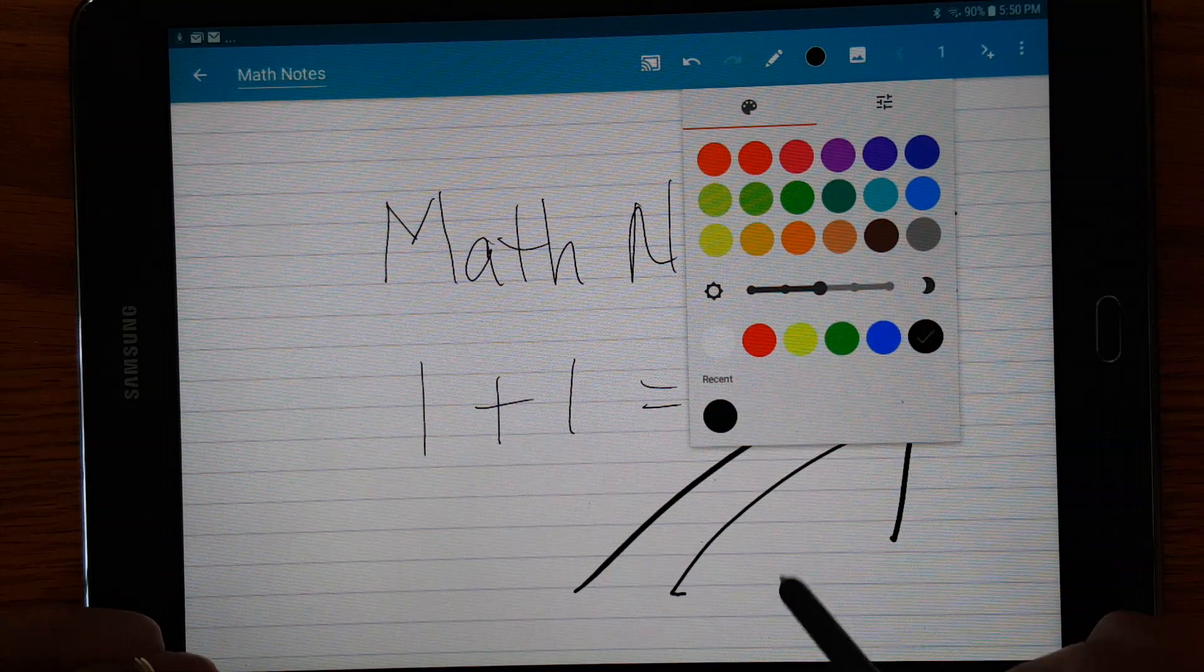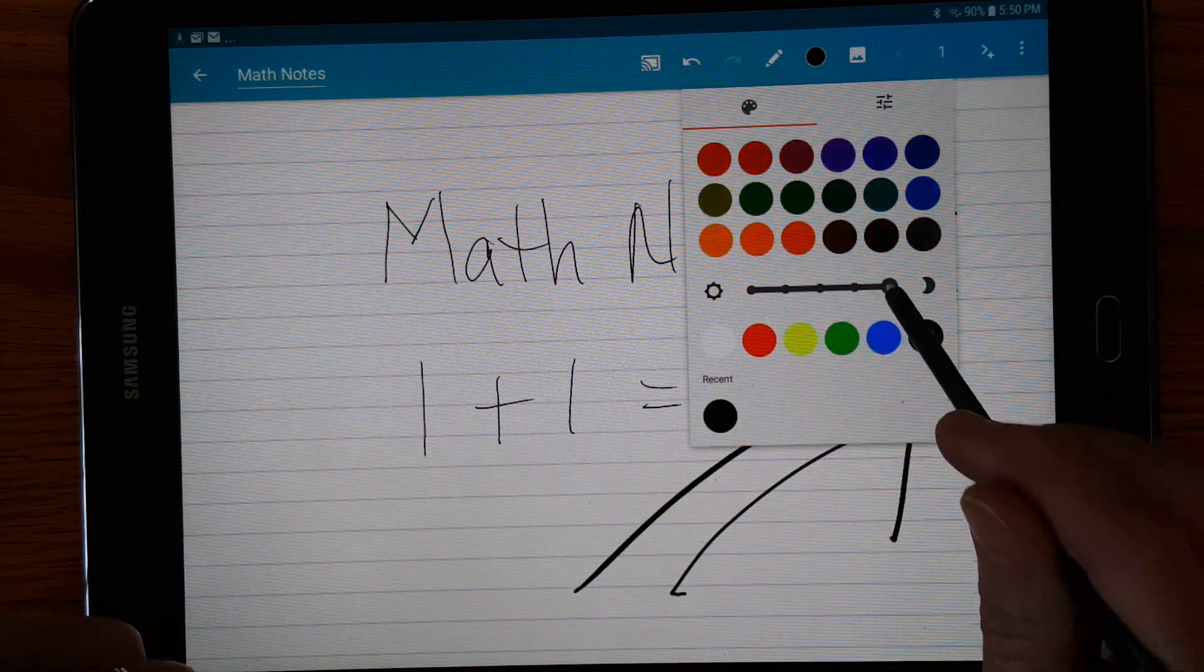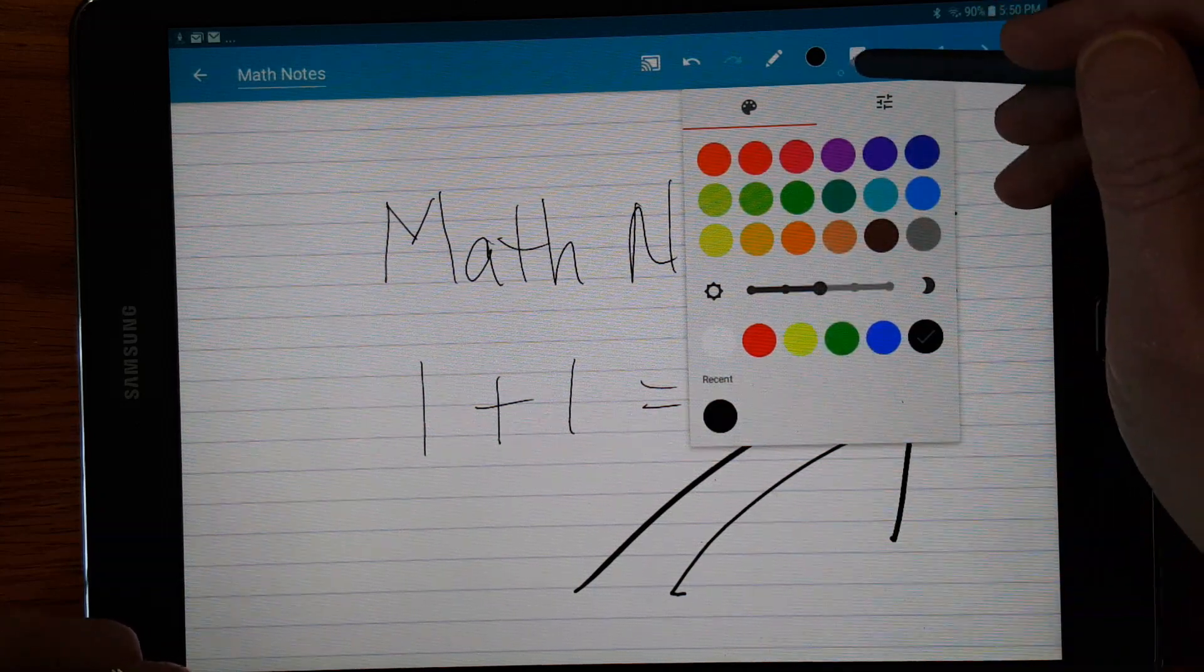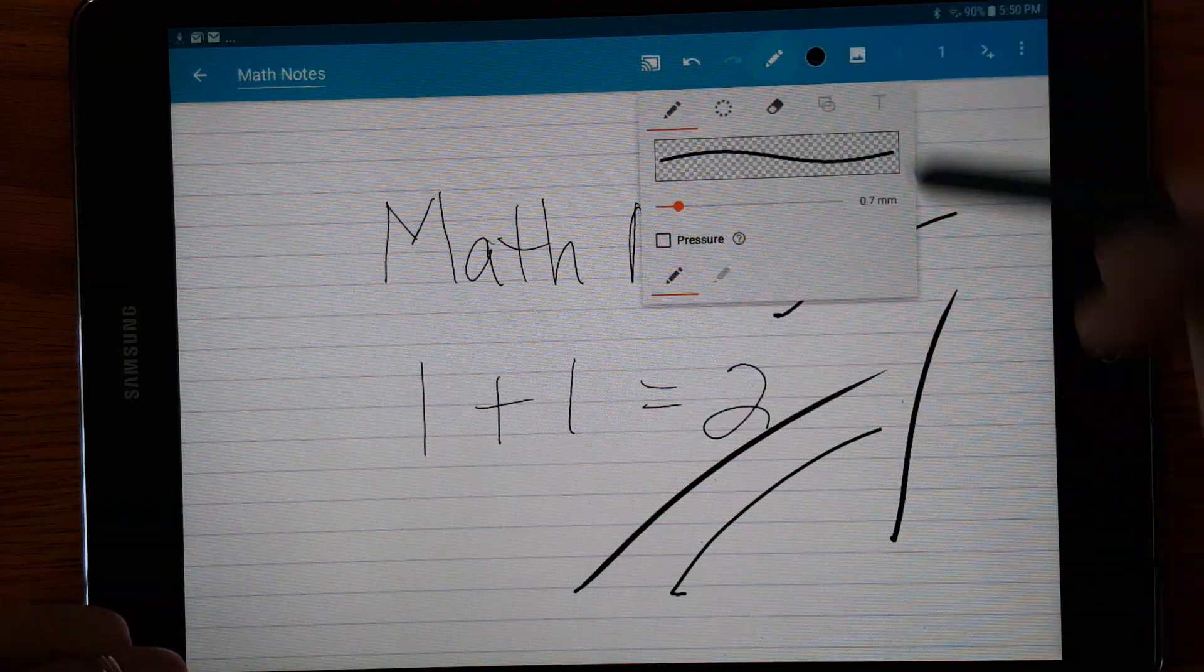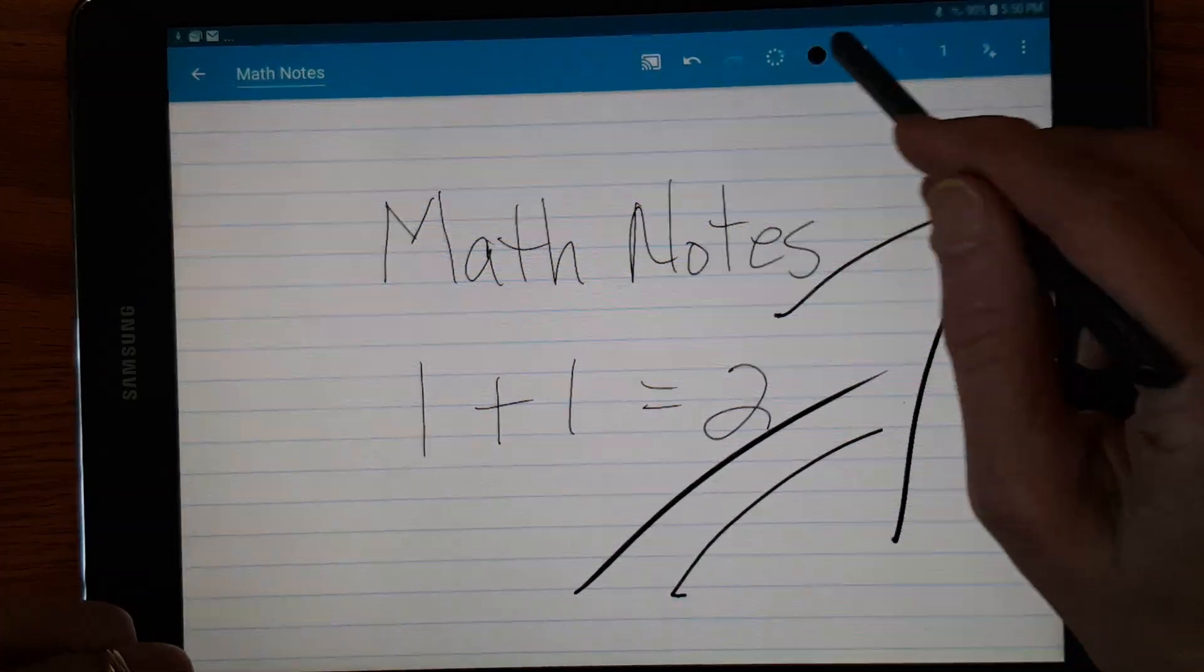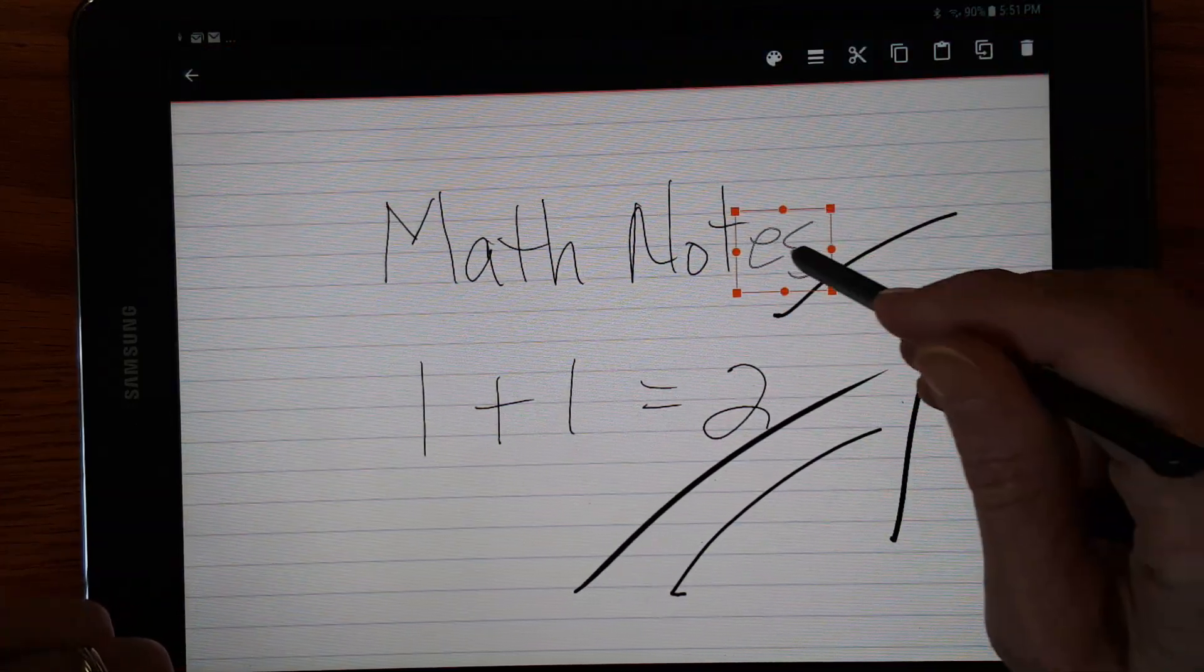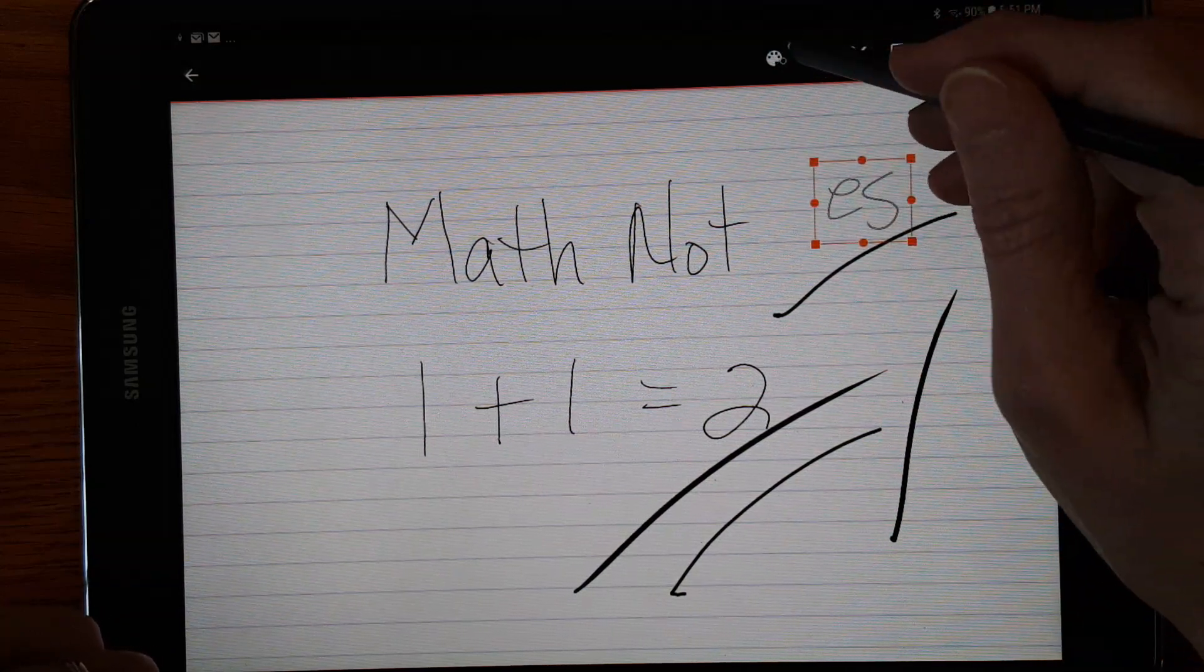You can choose colors. You can choose how bright or dim it is. And you can choose areas of the screen to select and move. That's nice.